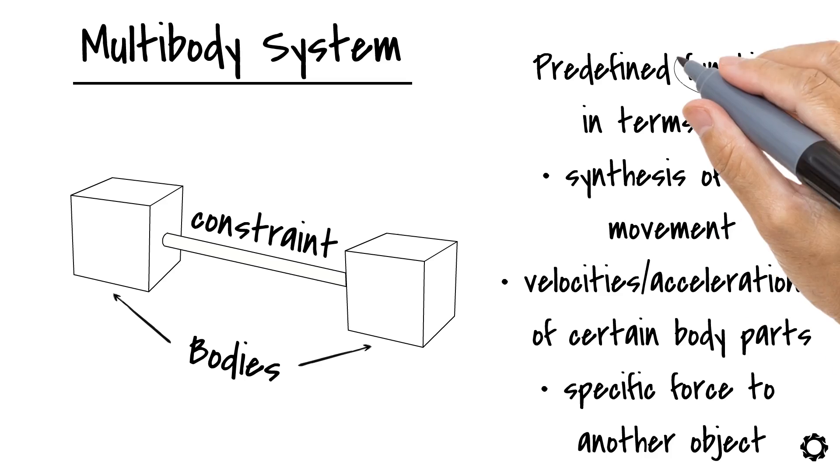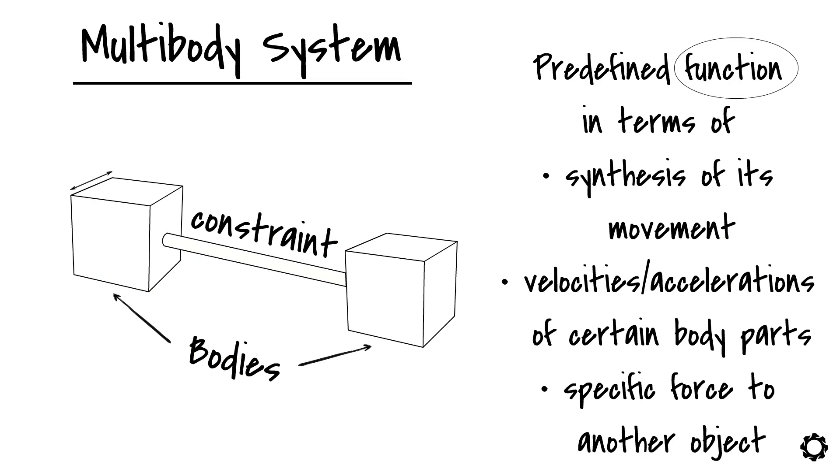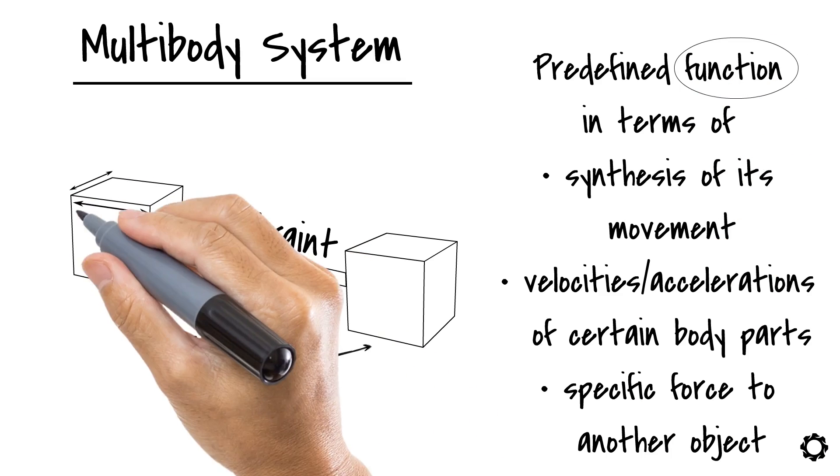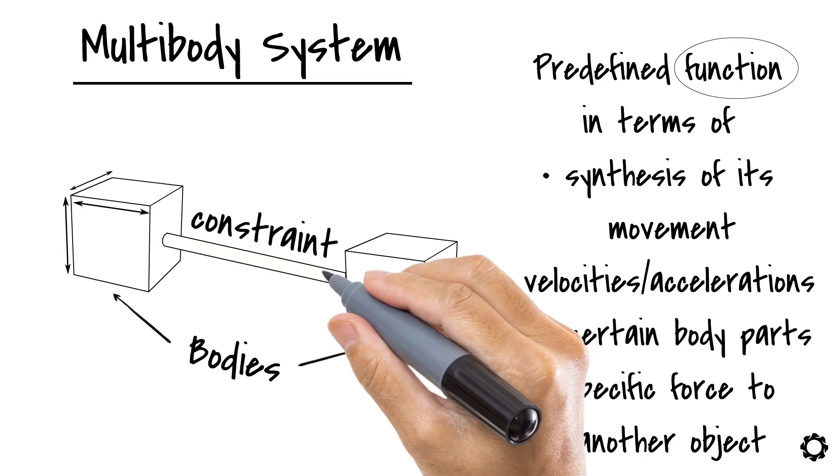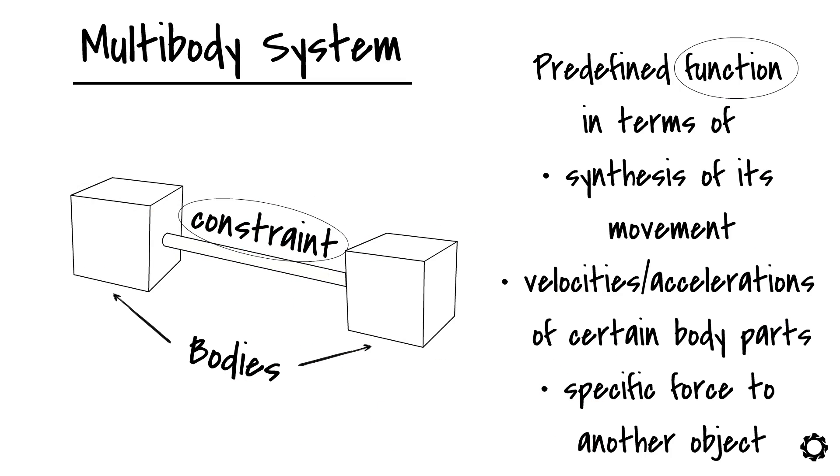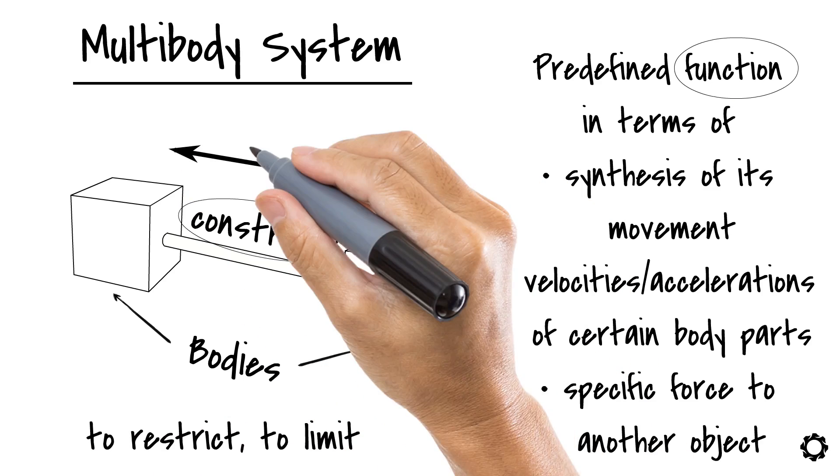Now to accomplish this function, besides the dimensions or general arrangement of the system, important care has to be taken when selecting the constraints to join the bodies because the ultimate job of a constraint is to restrict, to limit, the possible relative movement between two bodies.